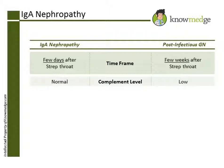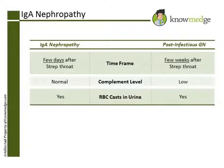Both conditions have red blood cell casts present in the urine, as they are both examples of nephritic syndrome.